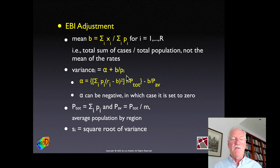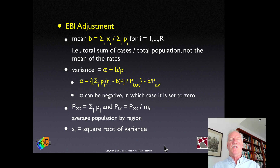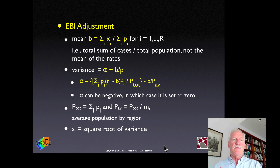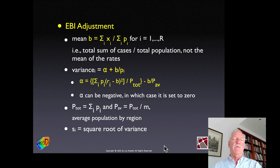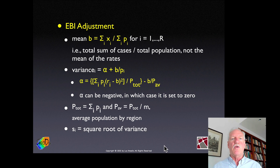With all these pieces — cases in each aerial unit, crude rates, overall mean, total population, average population — we compute the variance as alpha plus b over p_i, then get the standard deviation as its square root. We start with crude rates, compute the adjustments, transform each crude rate into z_i, and apply the local Moran to these z_i values.